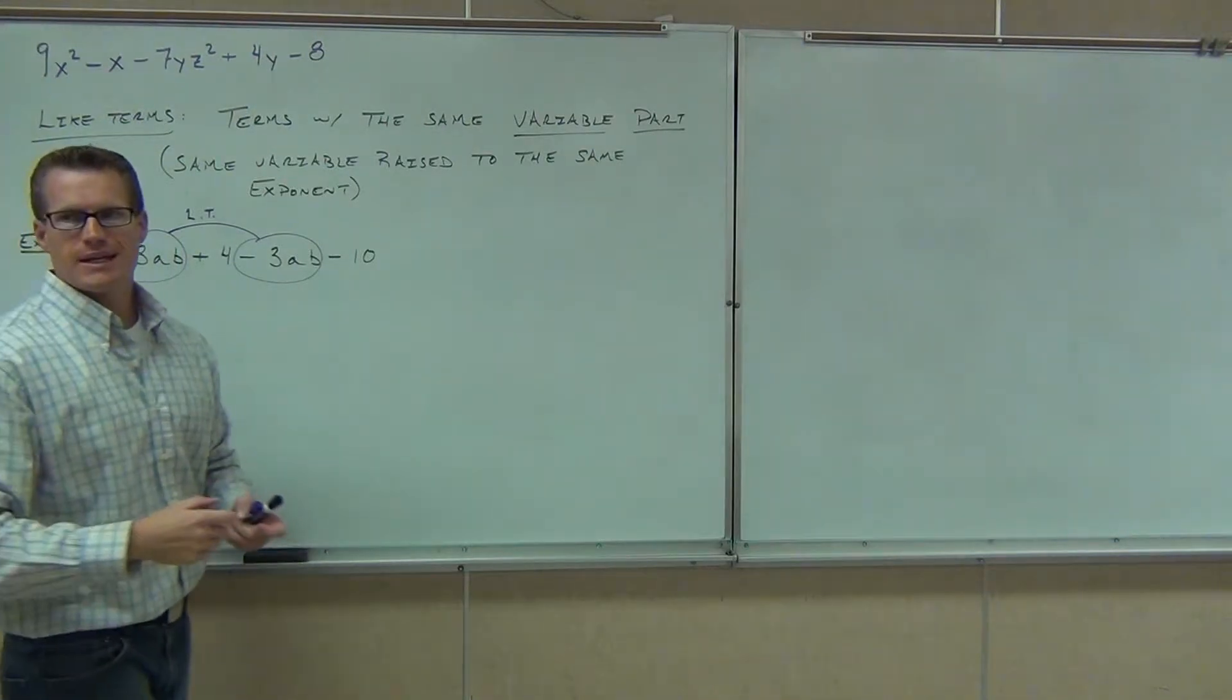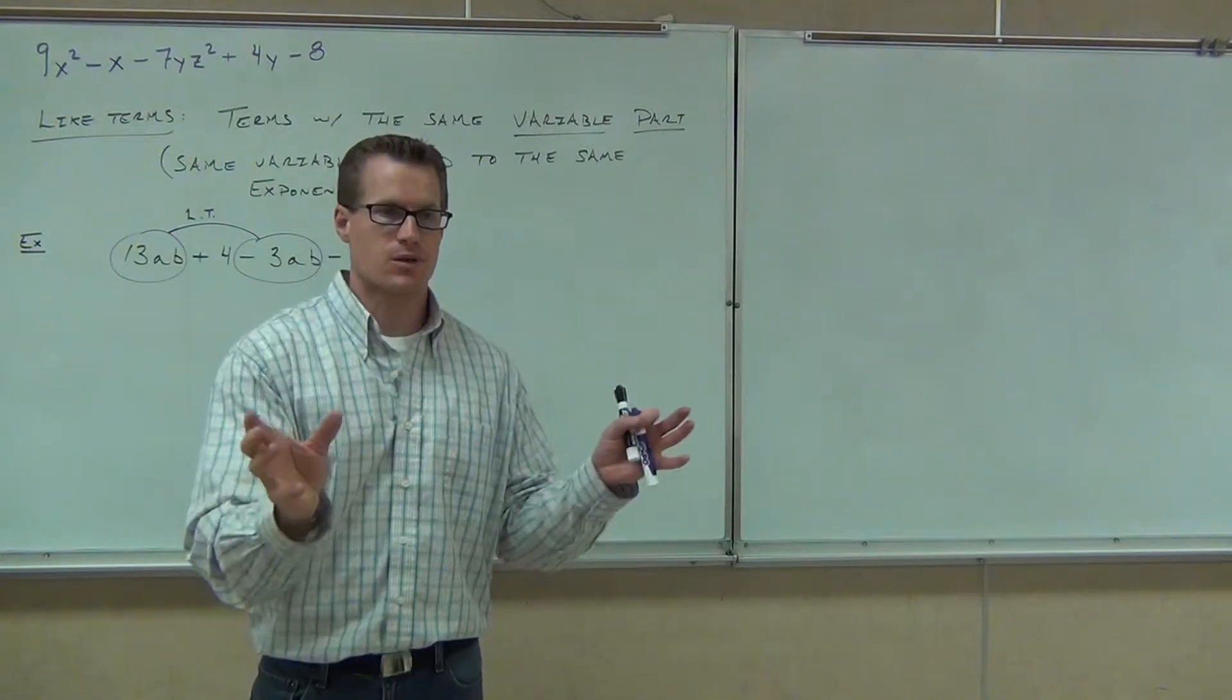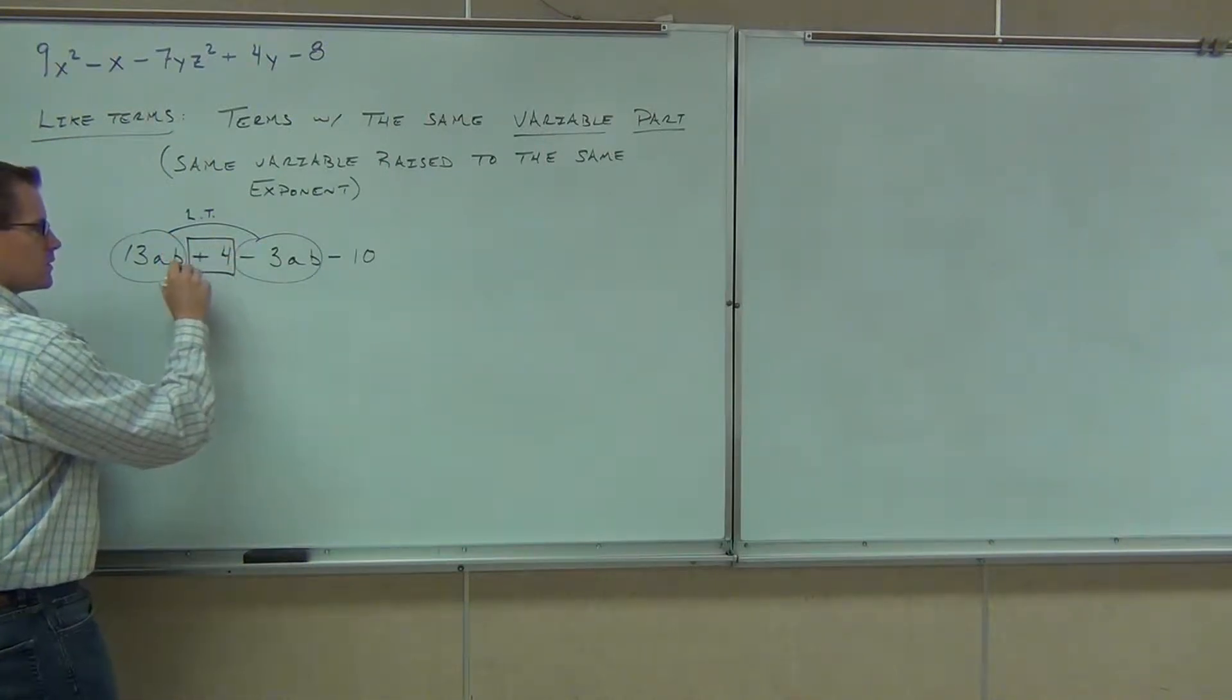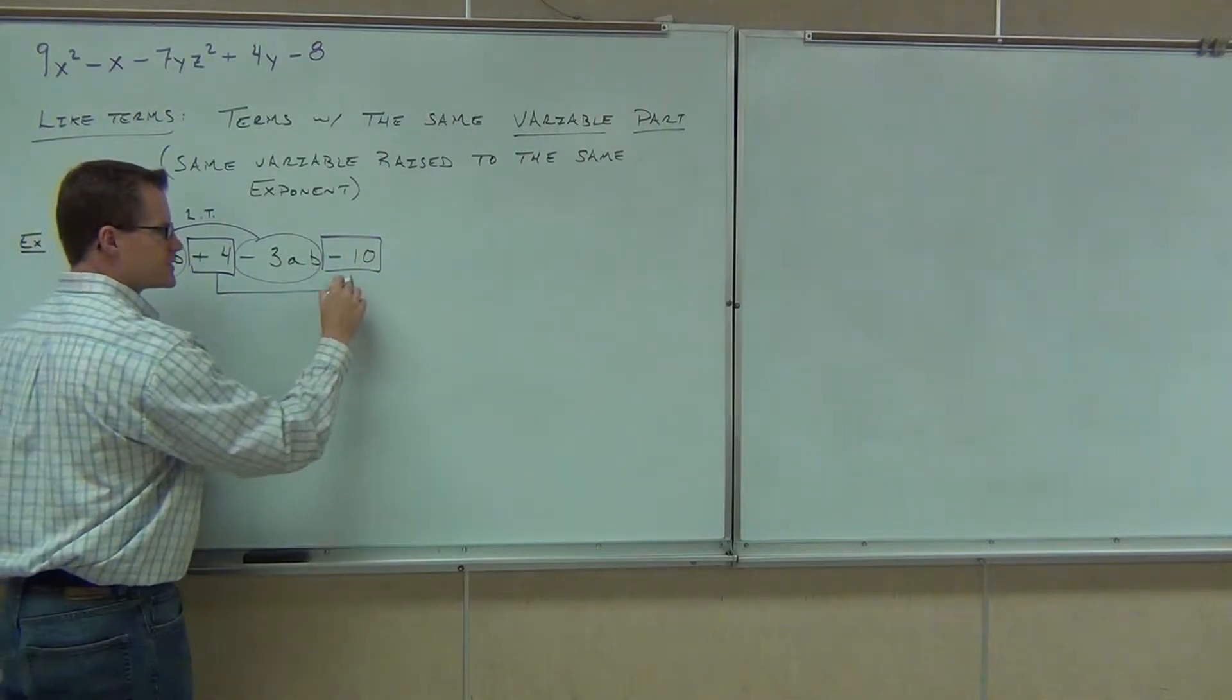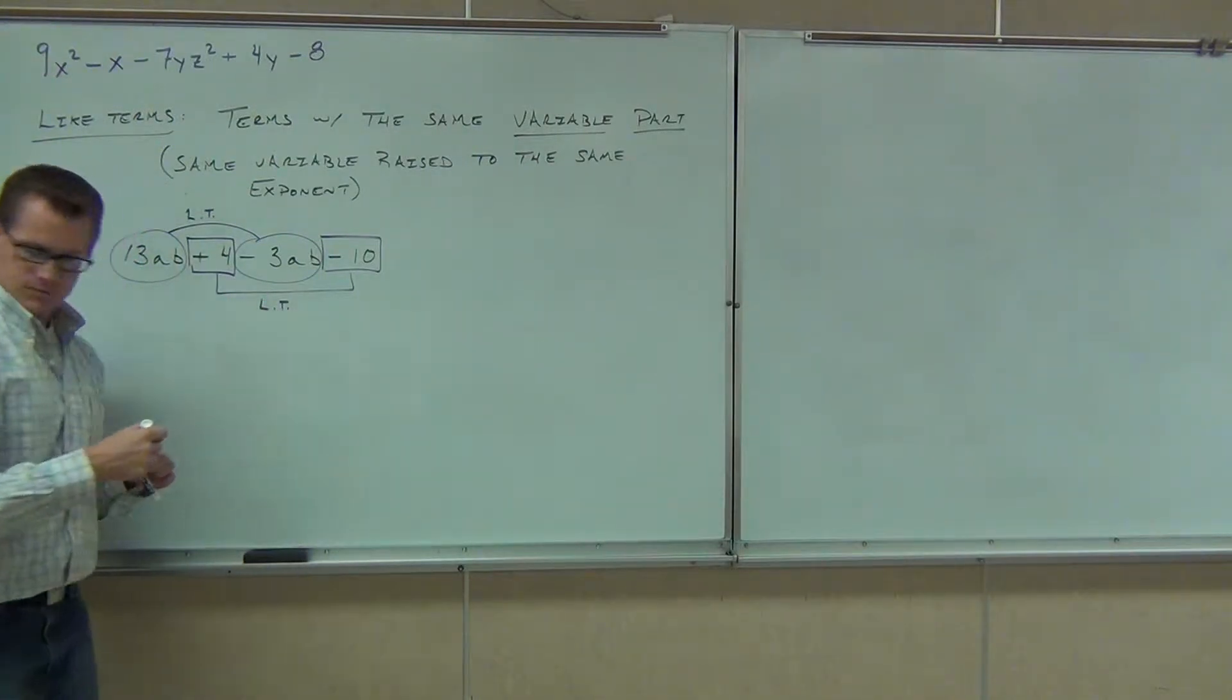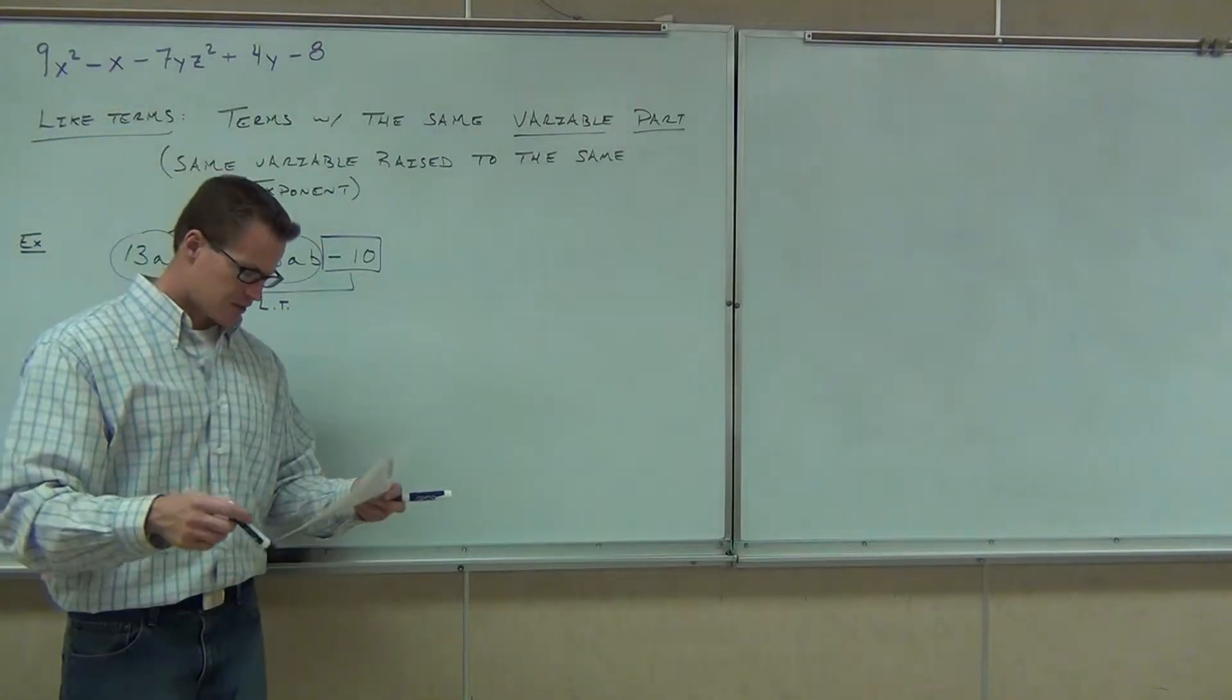By the way, any constant terms are automatically like terms. They're all the same. So, constant terms have one class. Anytime you see just numbers like the 4 and the negative 10 over here, which we consider to be negative 10 because we could write the plus negative, those are automatically like terms as well.